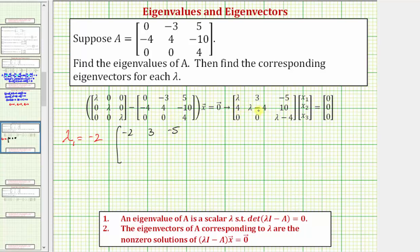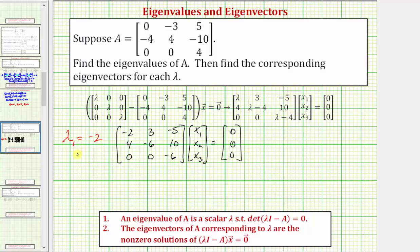The second row will be four, negative six, ten. The third row will be zero, zero, negative six. Now we'll write the corresponding augmented matrix in order to reduce to row echelon form and solve for x sub one, x sub two, and x sub three. The first row is negative two, three, negative five, zero. The second row is four, negative six, ten, zero. The third row is zero, zero, negative six, zero.